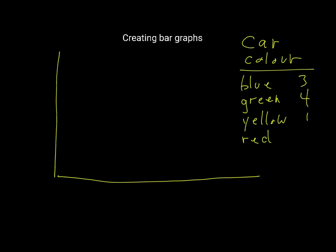And red cars, let's say you saw two. So along the x-axis here we have to put these labels: blue, green, yellow, and red.